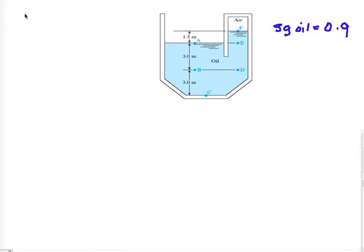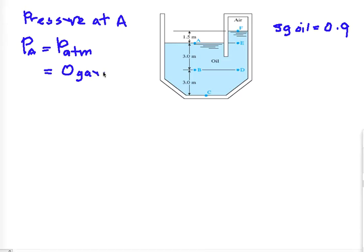The pressure for point A. Now if you take a look at point A, it's actually on the surface of the oil and it so happens is also exposed to the atmosphere. So the pressure at A is equal to atmospheric pressure and that will give us zero gauge pressure.